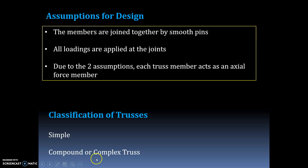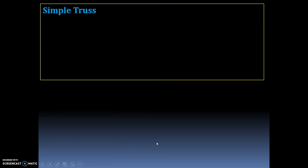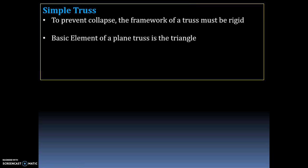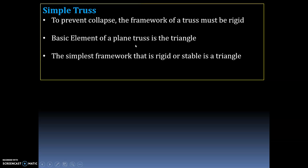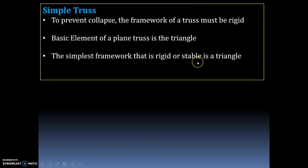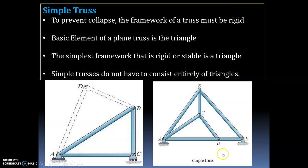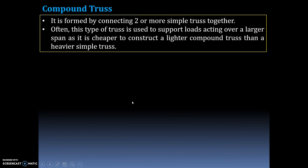The first type is a simple truss. To prevent collapse, the framework of a truss must be rigid. The basic element of a plain truss is a triangle — the simplest framework that is rigid and stable. Simple trusses consist entirely of triangles. You can see here this is the triangle, connected by different members to form a rigid frame.